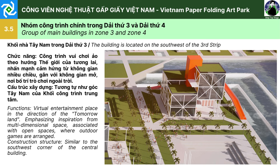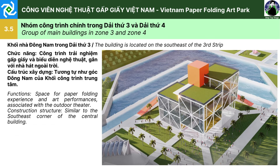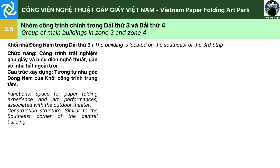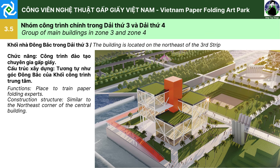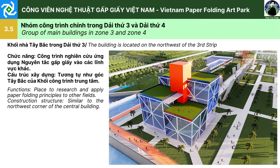Khối nhà Tây Nam trong giải thứ 3 có chức năng vui chơi ảo theo hướng thế giới của tương lai, nhấn mạnh cảm hứng từ không gian nhiều chiều gắn với các không gian mở, bố trí các trò chơi ngoài trời. Khối nhà Đông Nam có chức năng trải nghiệm gấp giấy và biểu diễn nghệ thuật gần với nhà hát ngoài trời. Khối nhà Đông Bắc có chức năng đào tạo chuyên gia gấp giấy. Khối nhà Tây Bắc có chức năng nghiên cứu, ứng dụng nguyên tắc gấp giấy và các lĩnh vực khác. Cấu trúc xây dựng của mỗi khối tương tự như góc tương ứng của khối công trình trung tâm.